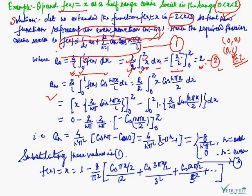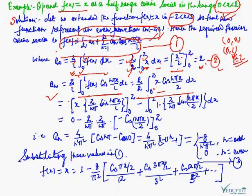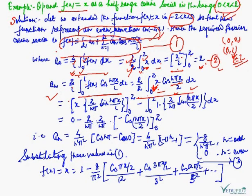Now, aₙ = (2/l) integral from 0 to l of f(x) cos(nπx/l) dx. Substituting l = 2, we have (2/2) integral from 0 to 2 of x cos(nπx/2) dx. Applying integration by parts, taking x as the first function and cos(nπx/2) as the second function.